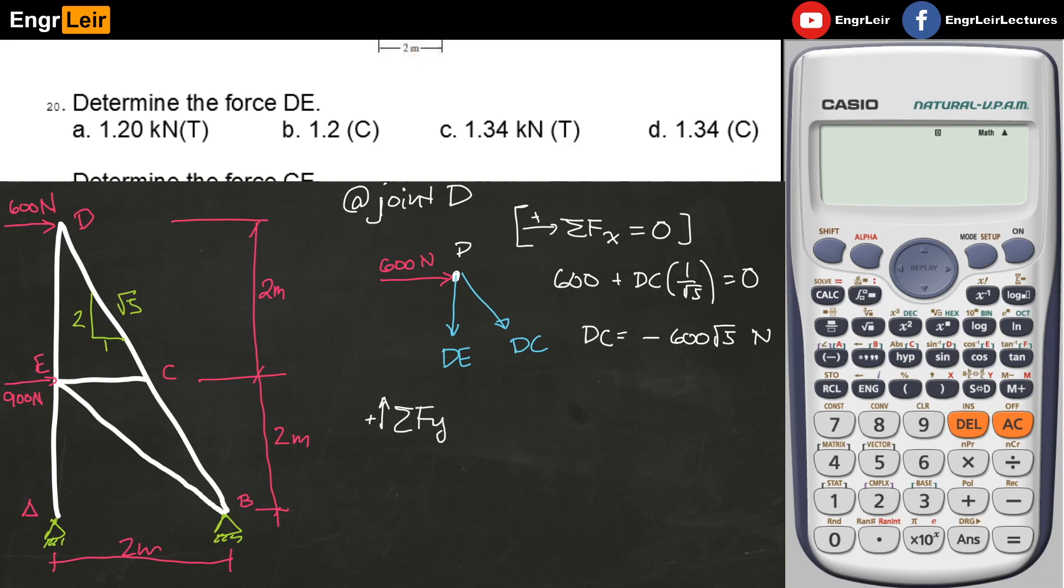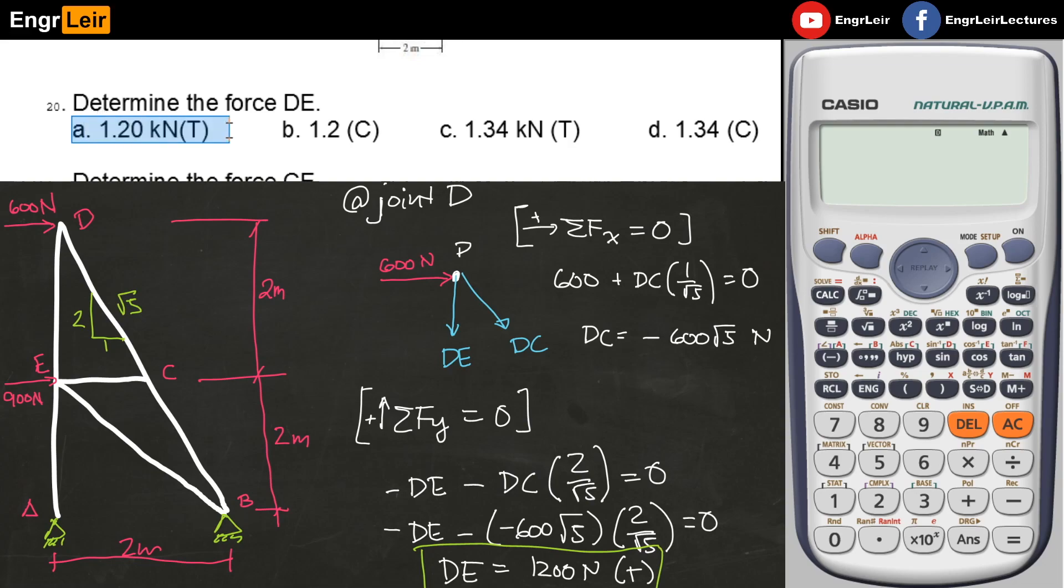Next step is to sum up forces Y, which must equal zero, again at joint D. And what you will get is - DE is downward, so negative DE. And then the Y component of DC, which is downward, is DC times 2 over square root of 5, must equal zero. Substituting the values, we have negative - because I didn't change the arrangement of the drawing - I'll put negative 600 times square root of 5 times 2 over square root of 5 equals zero. And I will get DE, which equals 1,200 Newtons positive. So this must be in tension. So DE is 1,200 Newtons in tension, that's 1.2 kilonewtons. The answer for the first question is letter A.